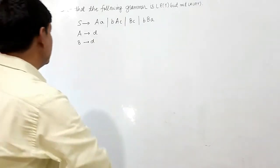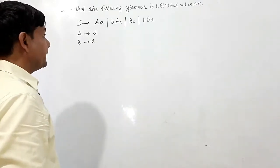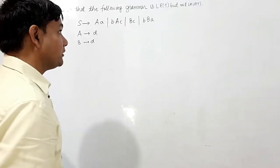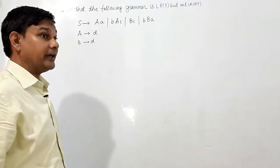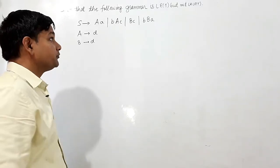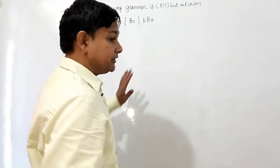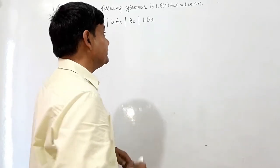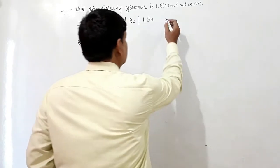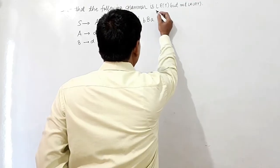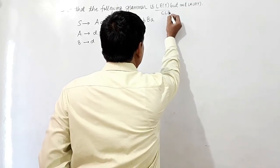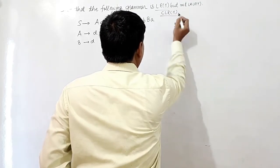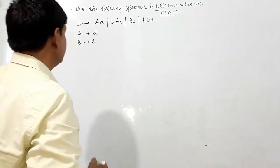One grammar is given to us and we have to prove. The grammar is LR1 but not LALR1. Wherever LR1 is written, this is the same as CLR1. LR1 means CLR1, which stands for Canonical LR1.